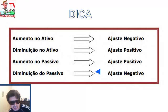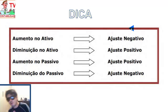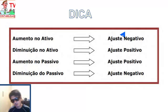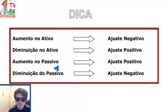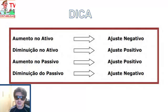Pensa sempre nessa tabelinha no fluxo de caixa: aumentou o ativo → ajuste negativo; diminuiu o ativo → ajuste positivo; aumentou o passivo → ajuste positivo; diminuiu o passivo → ajuste negativo. Tira um print screen, anota no caderno e vai treinando, porque esse tipo de dica é muito válido para resolver exercícios de fluxo de caixa.